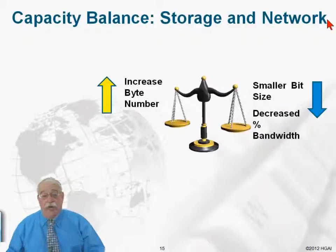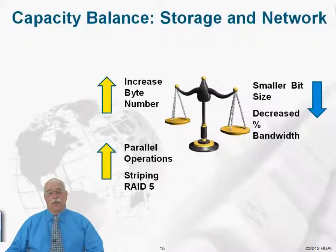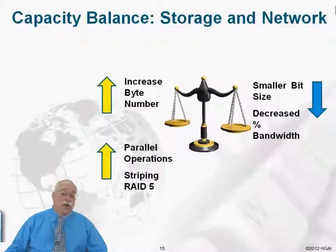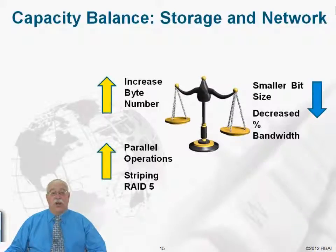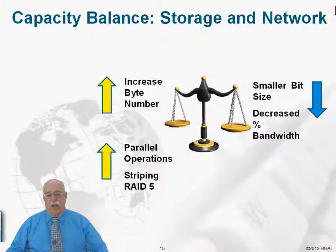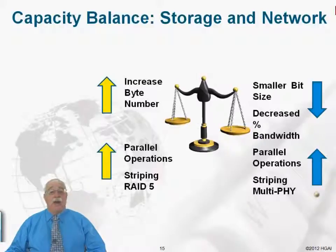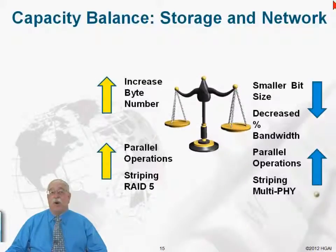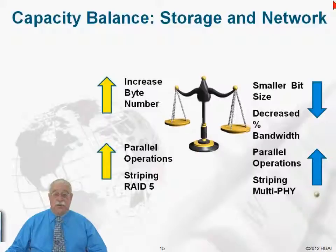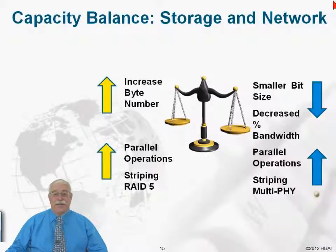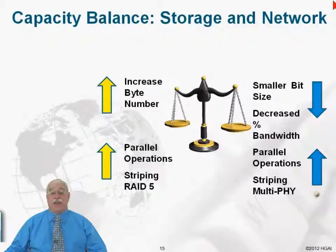From a parallel operation point of view — the idea of doing more than one thing at a time — striping in RAID 5 or even RAID 0, where we're using IO to multiple devices at the same time, as opposed to queuing IO operations to one device. On the network side, doing more than one thing at once — parallel operations. We talked about multi-FI or wide port and different lanes of information moving at the same time. If we've got multiple lanes to move information, we're going to increase the throughput of operations utilizing that kind of network infrastructure.